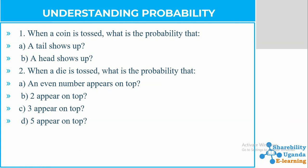Question two is saying: when a die is tossed, what is the probability that an even number appears on top? Here they are talking about a die — I hope everyone knows what a die is, those who have played those games know what a die means. They are telling us that when someone tosses a die, what is the probability that an even number is going to appear on top? Part B asks: what is the probability that two, three, or five appears on top?